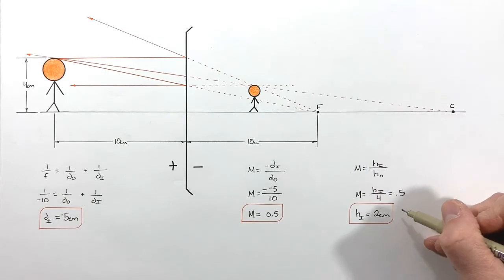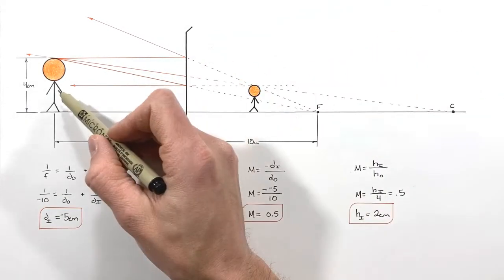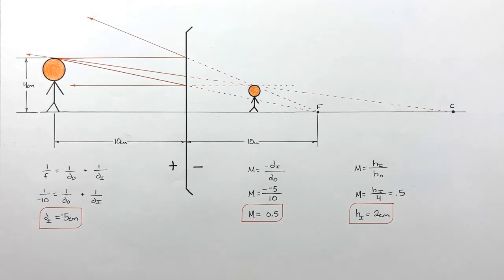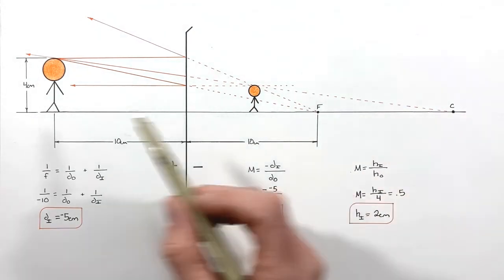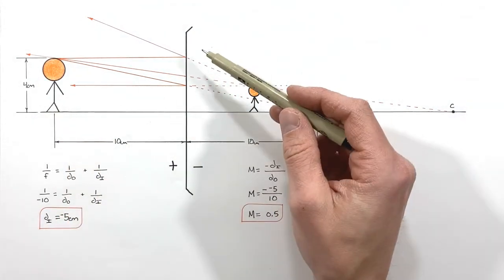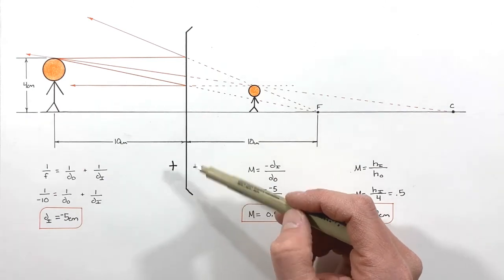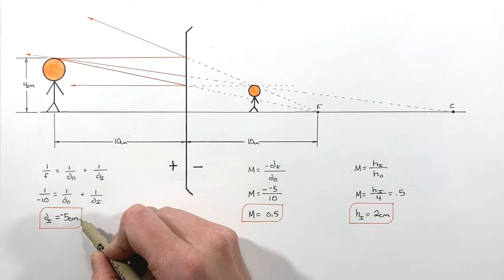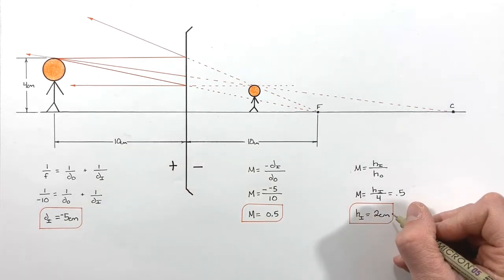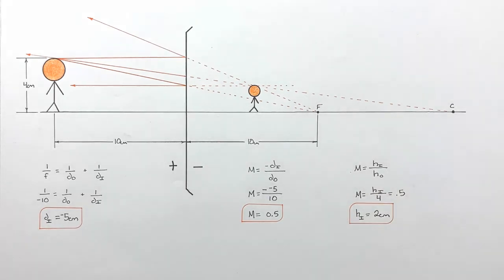Knowing the magnification, we can solve for the height of the image, and we find it is 2 centimeters — half as tall as our original 4 centimeter object. So in this problem we've drawn a ray tracing diagram for an object placed in front of a convex mirror, used the mirror equation to solve for the image distance, the magnification, and the height of the image. And on that note, that's all for now.